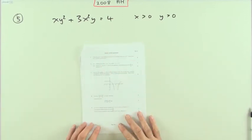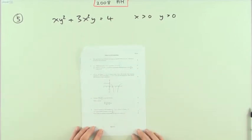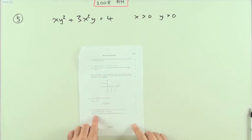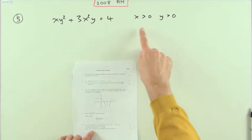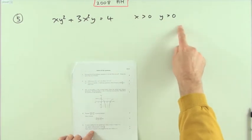Number five from the 2008 advanced higher. There you are, an implicit equation, get the derivative and get the equation of a tangent to the curve. It says an equation, it doesn't actually mean that there's going to be several you're going to find.